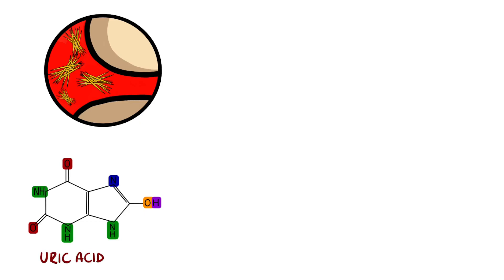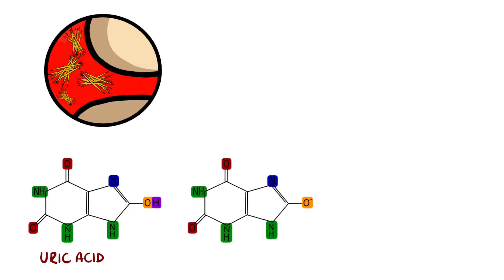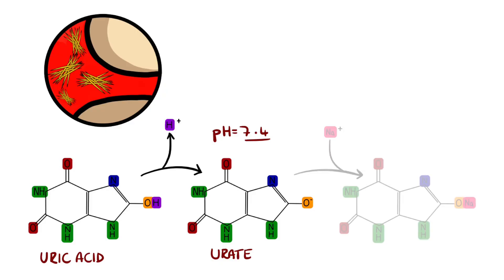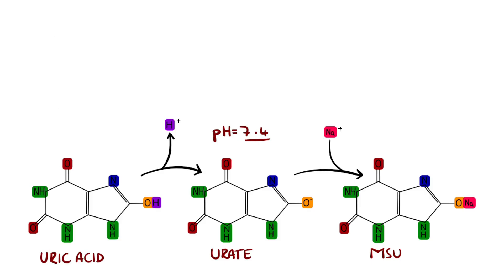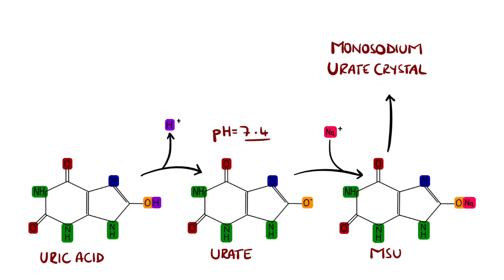Uric acid is the end product of human purine metabolism, but uric acid is a weak acid. Therefore, in the body, where the pH is around 7.4, it takes the form of urate, which is a negative ion, and then binds with the abundant extracellular sodium ions, which are positive, forming monosodium urate. In more acidic environments like the urine, it remains as uric acid. This is why in gout the crystals are monosodium urate, while renal stones are more likely to be made of uric acid crystals.